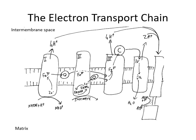We've now zoomed in. This is our inner mitochondrial membrane; on this side is our intermembrane space, on this side we have our matrix, and here we have our electron transport chain.